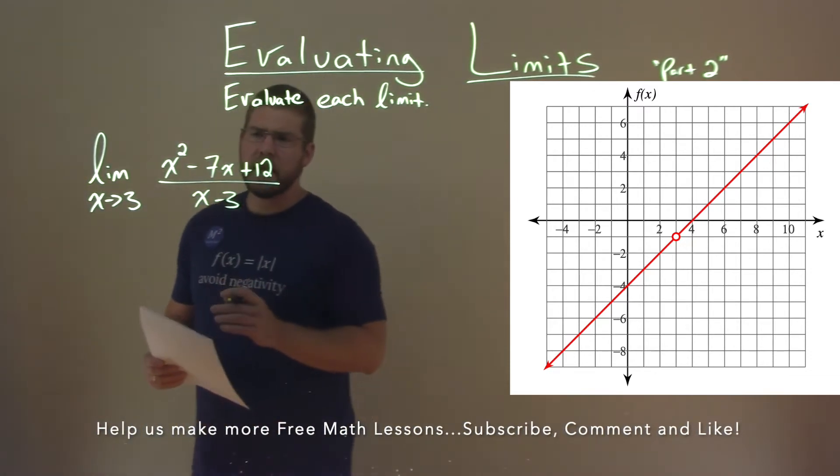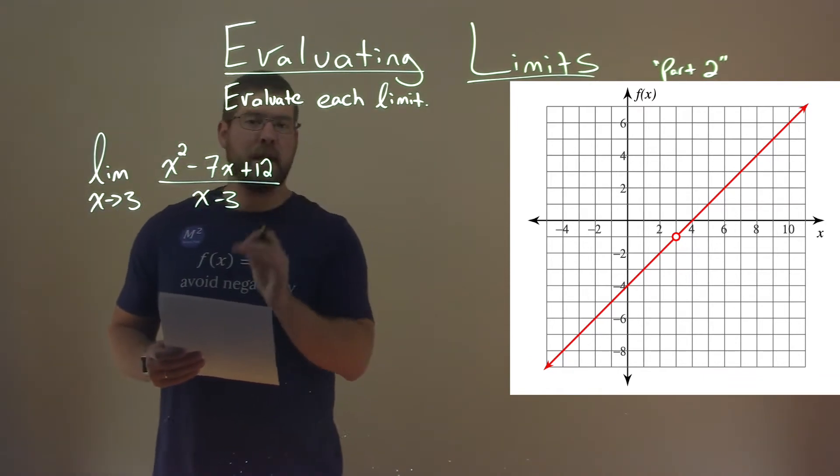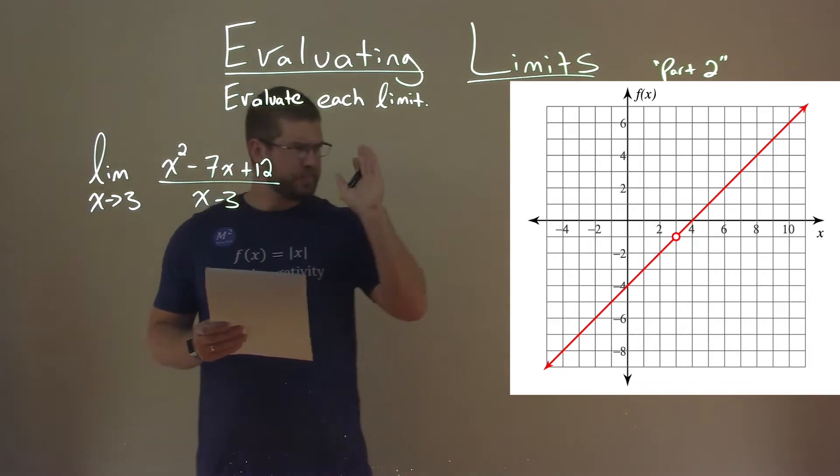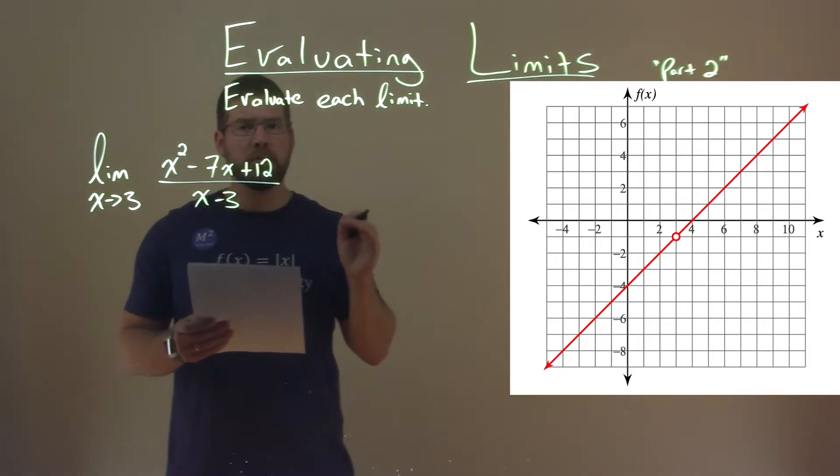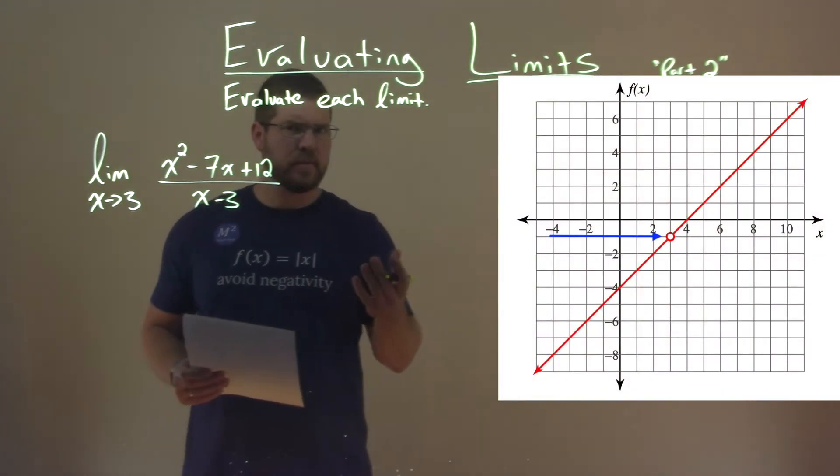Now, one thing I noticed here, we can graph this function. If we graph x squared minus 7x plus 12 over x minus 3, we can see that here on our graph. It's a linear line going through, but we have an open hole, an open circle there at positive 3, or where x is positive 3, which makes sense.